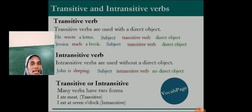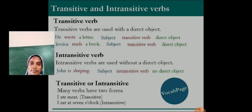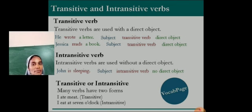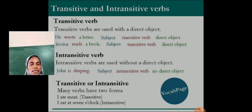Jessica reads a book. Jessica is the subject, reads is the verb, a book is the object. Intransitive verb: John is sleeping. The subject is John, the verb is sleeping, there is no object — it is called an intransitive verb. Dear students, I hope you all have understood this. Have a nice day. Thank you.